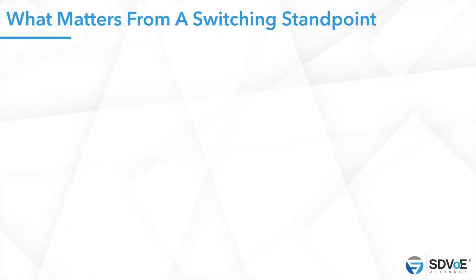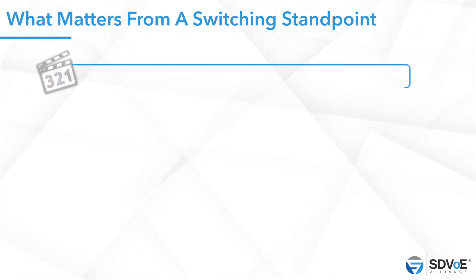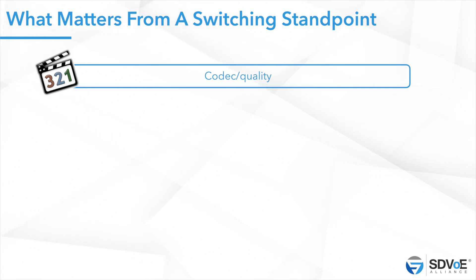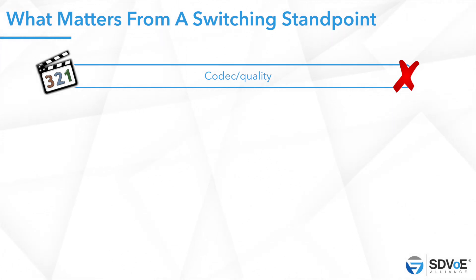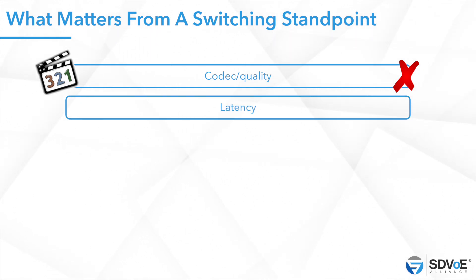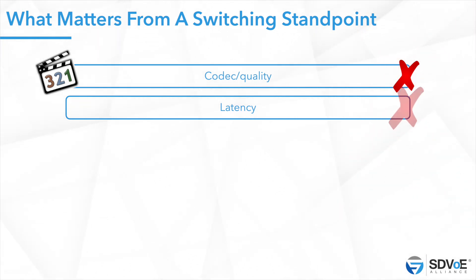Before going into design guidelines, let's review what's important when speccing an Ethernet network for AV over IP. Is the type of AV over IP — the codec or transport — important from a switching standpoint? No, because for Ethernet switches it doesn't matter; there's no good or bad AV over IP, all packets are the same. Is latency something to consider when selecting your network backend? No — all switches are faster than required; switches measure latency in microseconds, not milliseconds, so you will not select a network backend based on latency.